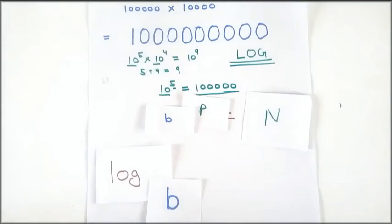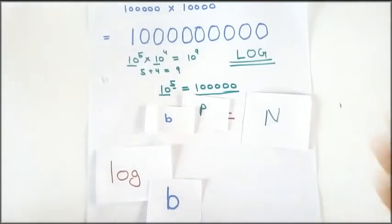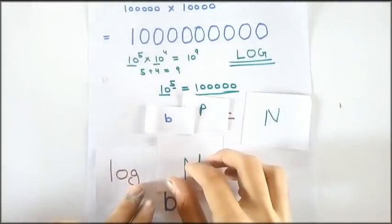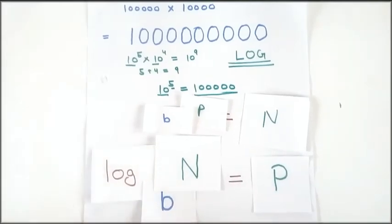Now the base came down. This comes down and this number n does not remain after the equal to. This n comes in here. And then the power which is p goes there. And here is an equal to. So log to the base 10 of n is equal to p.